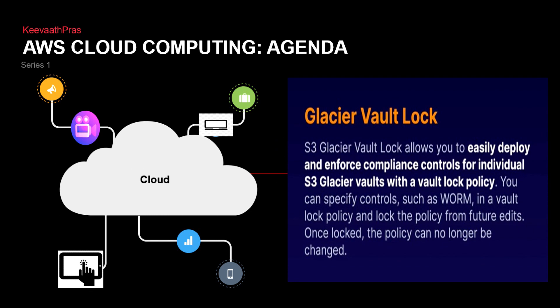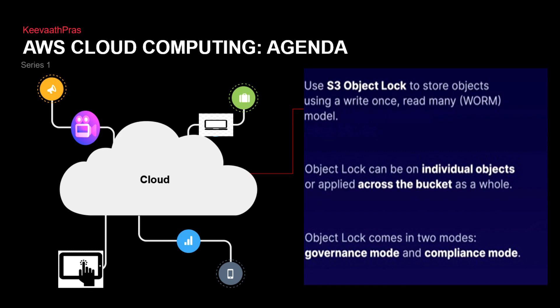Now what is glacier vault lock? We saw about glacier — anything greater than 90 days, deep archive is 180 days, with retrieval times of 12 hours to 48 hours. The glacier vault lock allows you to easily deploy and enforce compliance controls for the glacier vault policy. You can specify controls such as WORM. It acts as a vault policy and locks the policy from future edits. Once it is locked, the policy can no longer be changed — exactly like what we have seen with governance mode, compliance, retention, and legal hold.